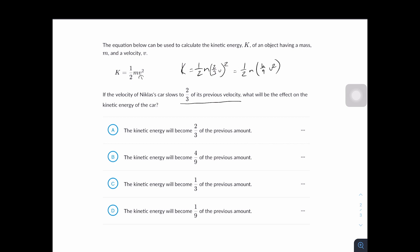So as you can see that K right here is being multiplied by this four-ninths that wasn't here in the original equation. So answer choice B is correct. The kinetic energy will become four-ninths of its previous amount.